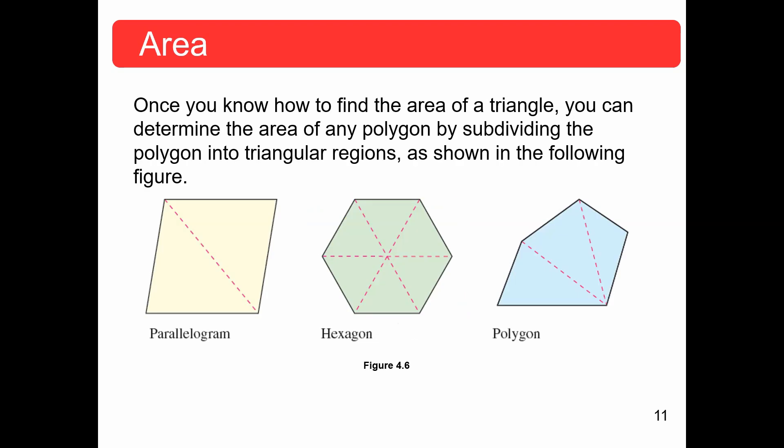Now, once you know that, you can basically determine the area of any polygon by subdividing it into triangular regions. So if you have a parallelogram, you can split it in half. Hexagon, you can split it using the center going out to any of the vertices. Same thing with any polygon.